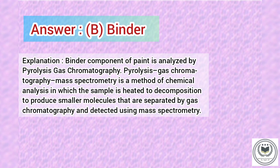Binder component of paint is analyzed by pyrolysis gas chromatography. Pyrolysis gas chromatography mass spectrometry is a method of chemical analysis in which the sample is heated to decomposition to produce smaller molecules that are separated by gas chromatography and detected using mass spectrometry.